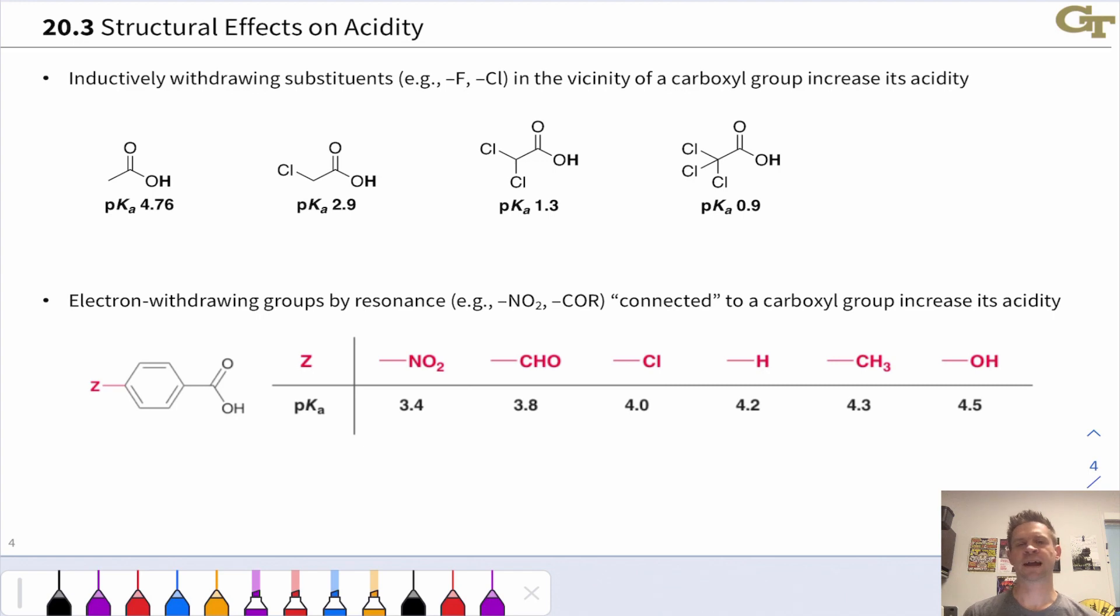Trends in the acidity of carboxylic acids follow general patterns related to electron donating and withdrawing groups and inductive and resonance effects. For example, if we add inductively withdrawing halogen substituents to the CH3 carbon of acetic acid, we see an increase in acidity.